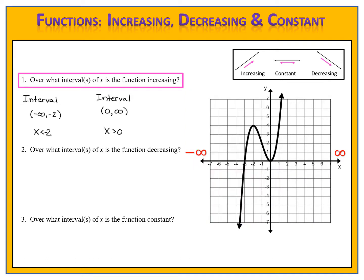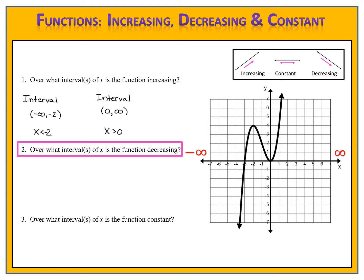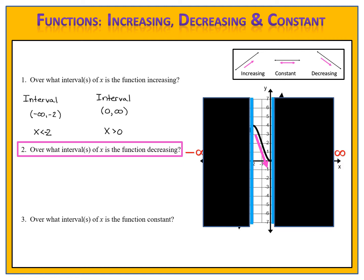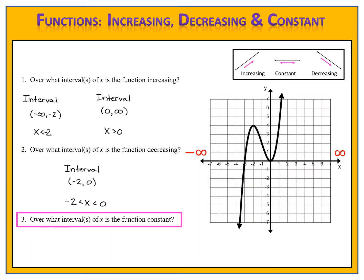The second question asks over what intervals of x the function is decreasing. We look at the graph and identify where that is. We draw our guidelines, which are very easy to draw this time, and focus on that part of the graph. Looking at the x-axis, the interval is from negative 2 to 0. We can write that using interval notation or a single compound inequality. We've now identified where the function is decreasing.